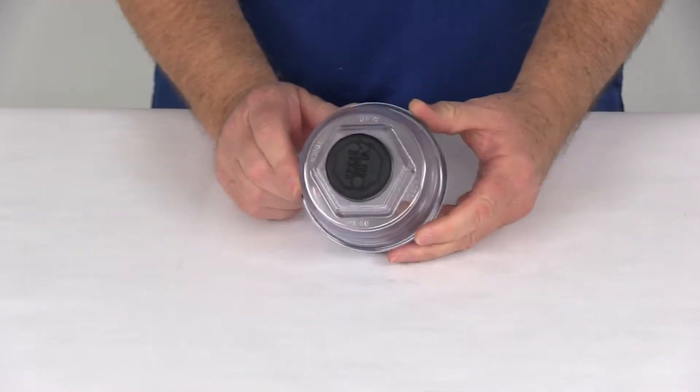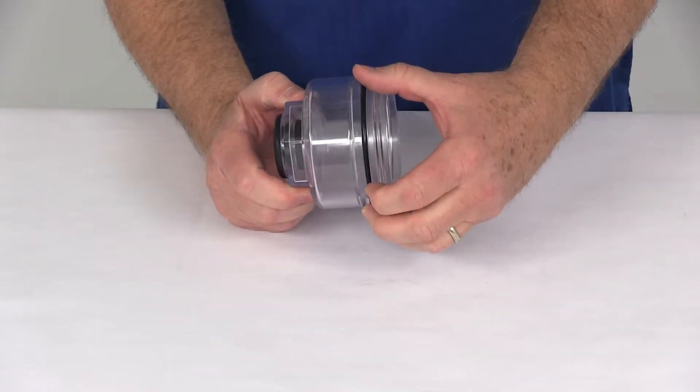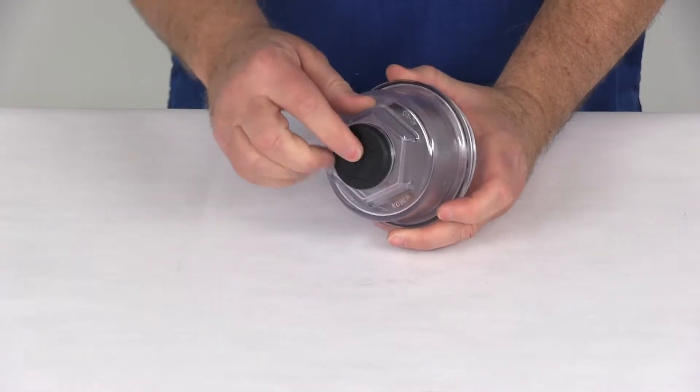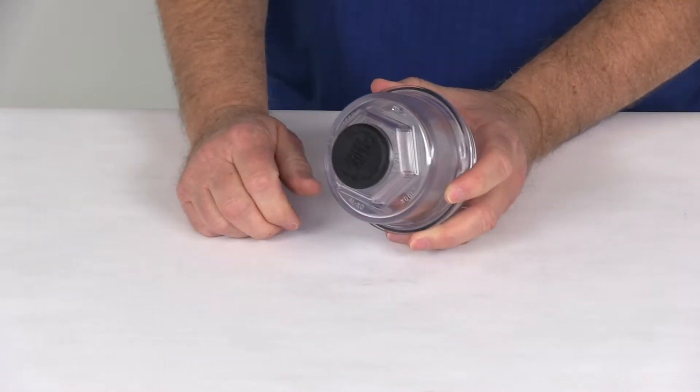It's a clear polycarbonate cap that allows you to see the oil level in your hub. Comes with this nice rubber watertight o-ring seal. It has a rubber plug installed right in the center here that you can actually pull out to fill the hub with oil.